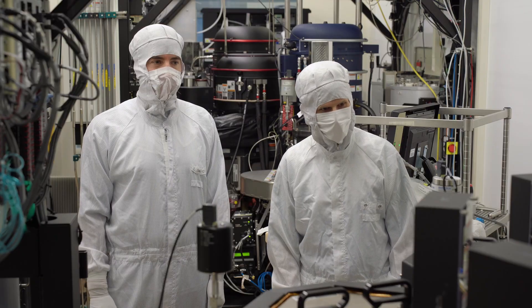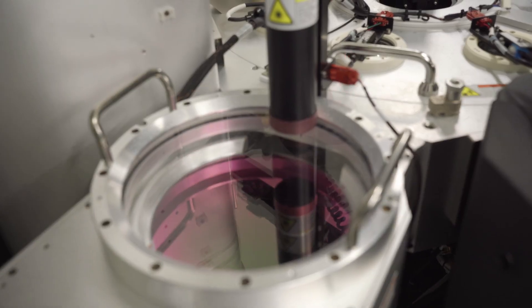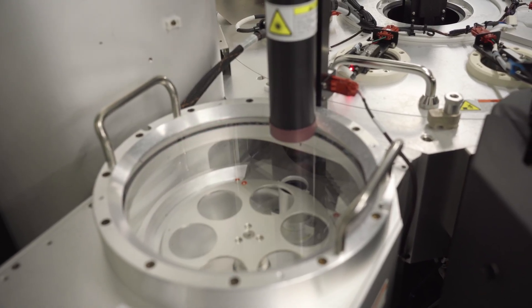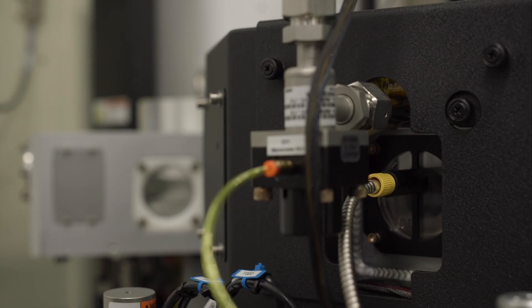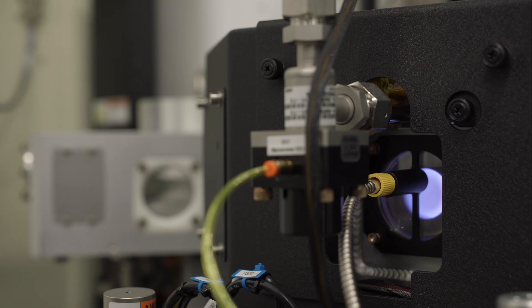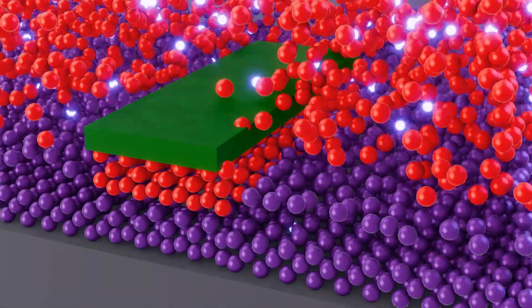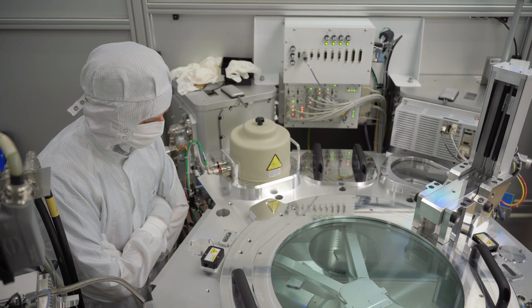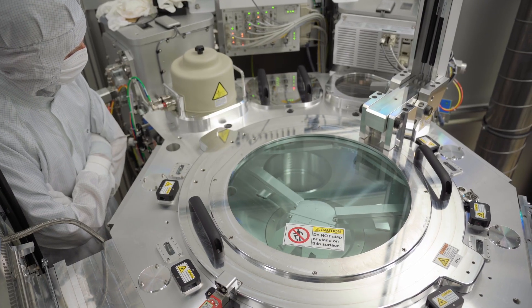This is a reactive ion etching tool. So here we are in the maintenance area of the clean room. In these kind of tools, we etch away material, as the name says. And we do this by creating a plasma above the wafer. We have reactive gases above the wafer. They get ionized in a plasma. And the way it's constructed is such that the plasma can react with the material that we want to etch away.